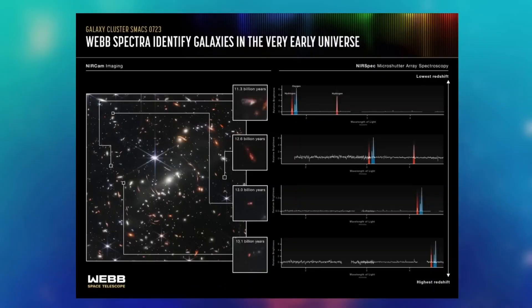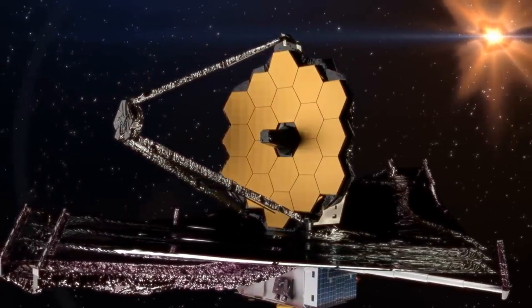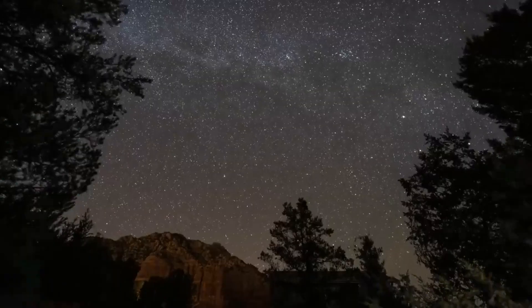Secondly, spectra help astronomers understand what is happening within a galaxy. Each color marks the interaction between photons and specific atoms or molecules.